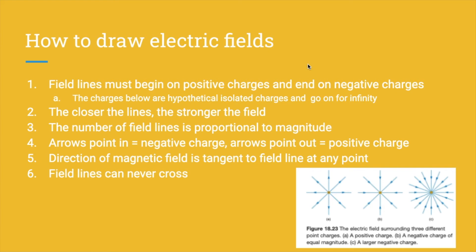Let's get onto some basic steps for drawing electric fields. Number one: field lines must begin on positive charges and end on negative charges. The ones in the picture below are hypothetical isolated charges that go on for infinity and therefore have no beginning or end. Number two: the closer the lines, the stronger the field. Number three: the number of field lines is proportional to the magnitude of the electric field. Number four: arrows pointing in means there's a negative charge; if the arrows point out, it means there's a positive charge. Number five: the direction of the electric field is tangent to the field line at any point. Number six: field lines can never cross.